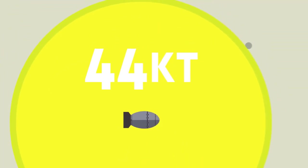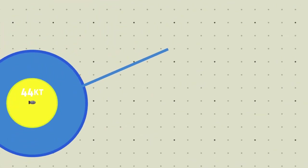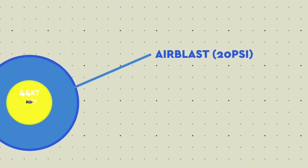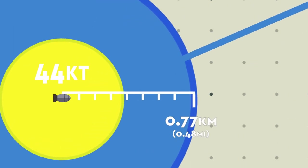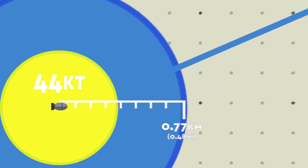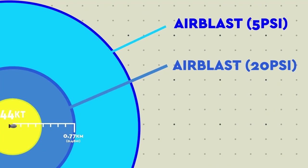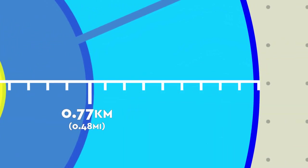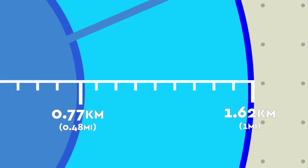Going back to our original scenario, a 44-kiloton nuke would produce a 20 psi shockwave up to 0.77 kilometers away from ground zero, with the smaller but still deadly 5 psi shockwave stretching up to 1.62 kilometers from the center of the blast.